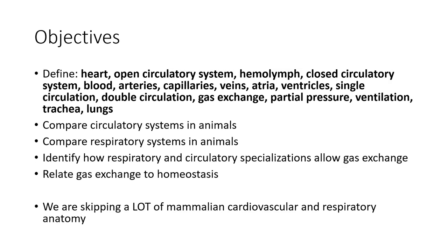Be able to define: heart, open circulatory system, hemolymph, closed circulatory system, blood, arteries, capillaries, veins, atria, ventricles, single circulation, double circulation, gas exchange, partial pressure, ventilation, trachea, and lungs. Compare circulatory systems in animals. Compare respiratory systems in animals. Identify how respiratory and circulatory specializations allow gas exchange and relate gas exchange to homeostasis.